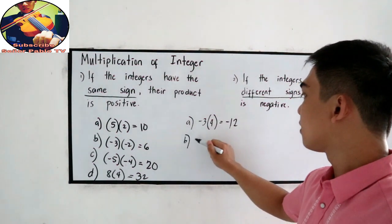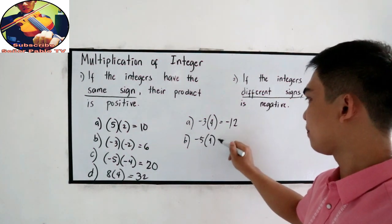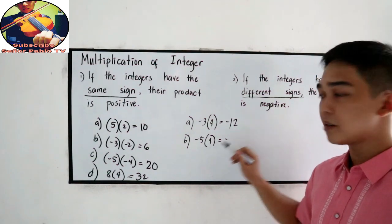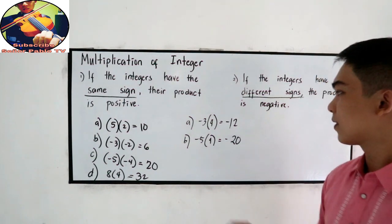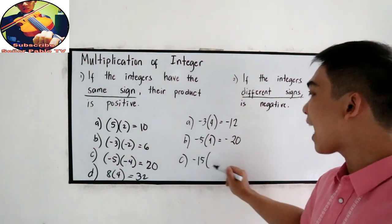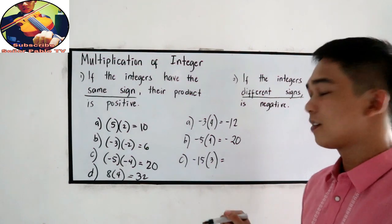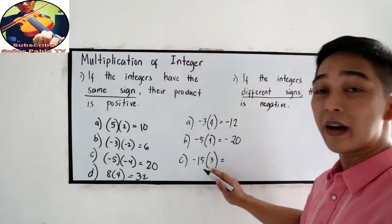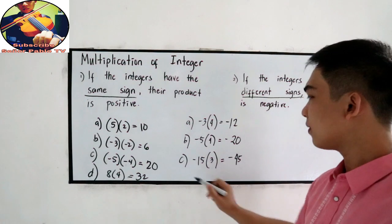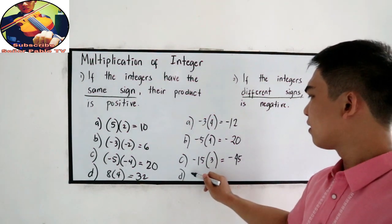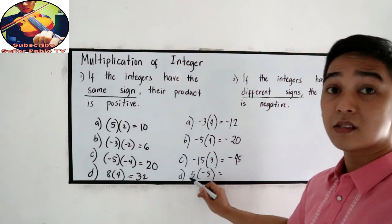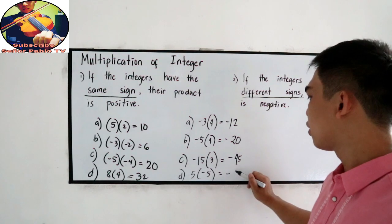Letter B: negative 5 times 4 — one negative and one positive — that is negative 20. Letter C: negative 15 times 3 — one negative and one positive — negative 15 times 3 is negative 45. And D: 5 times negative 5 — one positive and one negative — that is negative 25.